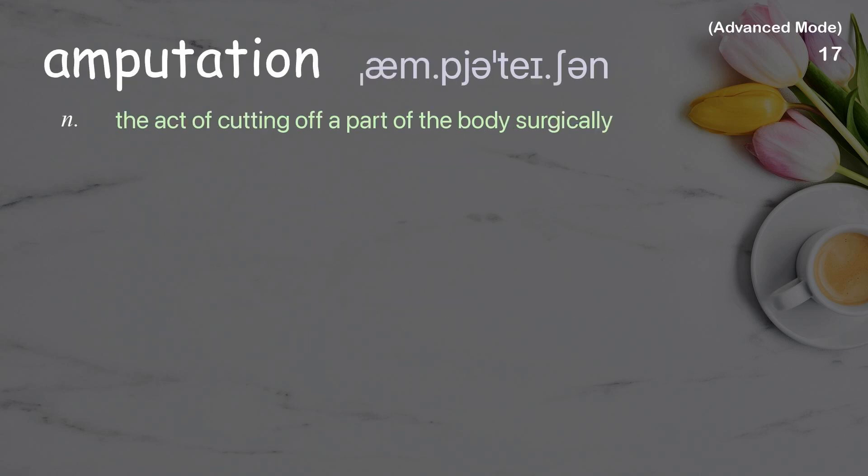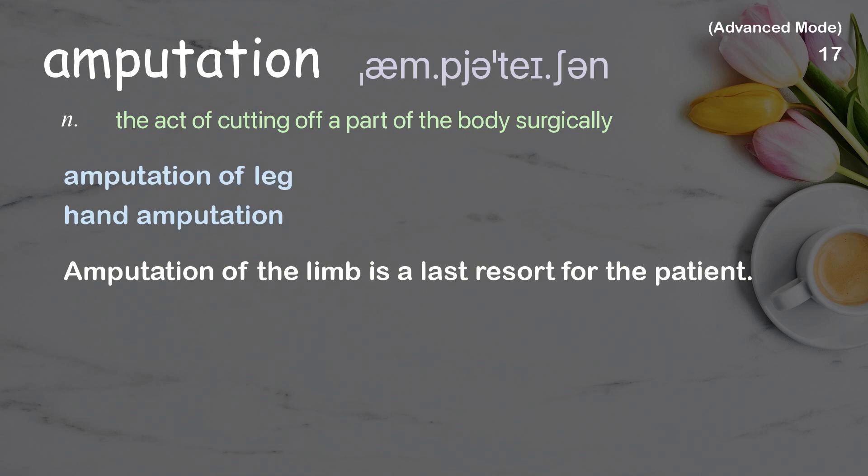Amputation: the act of cutting off a part of the body surgically. Examples: amputation of leg, hand amputation. Amputation of the limb is a last resort for the patient.